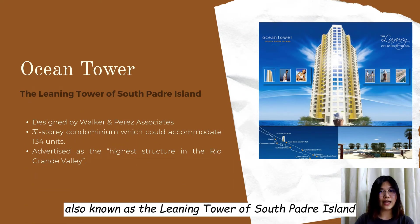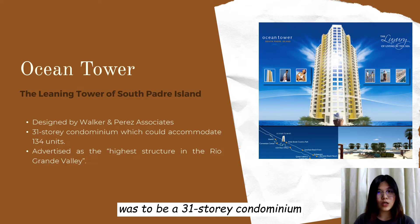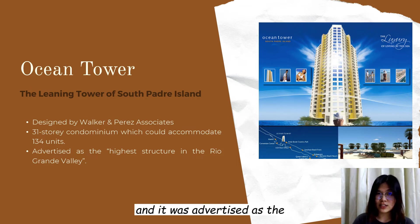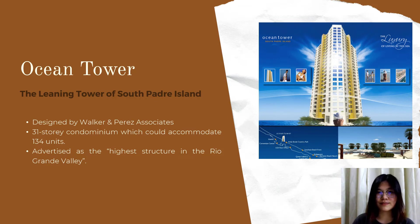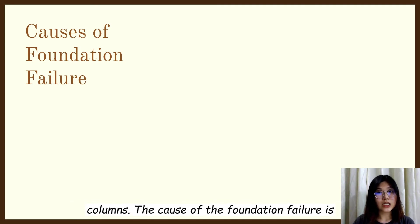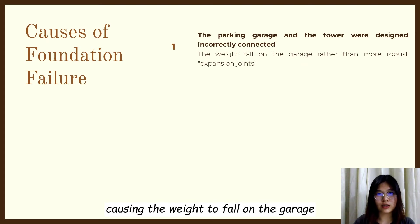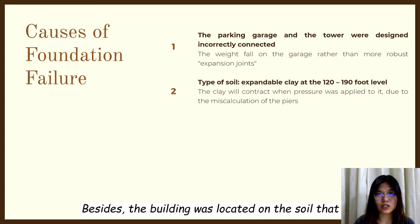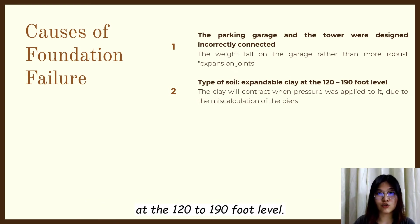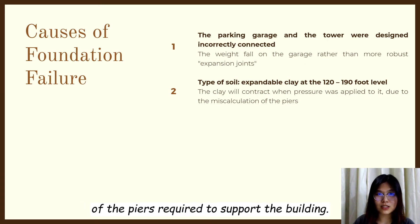The Ocean Tower, also known as the Leaning Tower of South Padre Island, was designed by Walker and Perez Associates and was to be a 31-storey condominium accommodating 134 units. It was built on a narrow strip of sand close to the Mexican border and was advertised as the tallest structure in the Rio Grande Valley. However, in May 2008, developers discovered cracks in the parking garage columns. The cause of the foundation failure is because the parking garage and the tower were designed incorrectly connected, causing the weight to fall on the garage rather than more robust expansion joints. Besides, the building was located on soil containing a substratum of expandable clay at the 120 to 190 foot level, which contracted when pressure was applied due to miscalculation of the piers required to support the building.